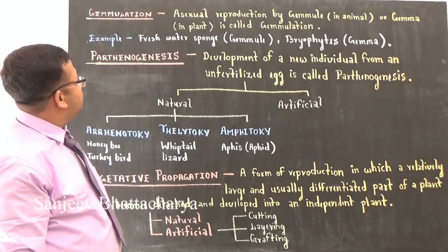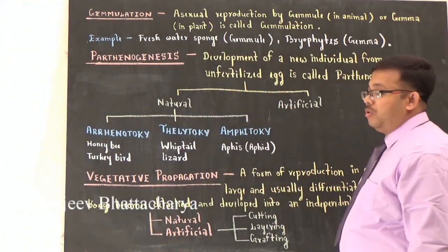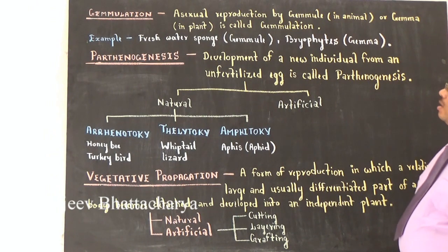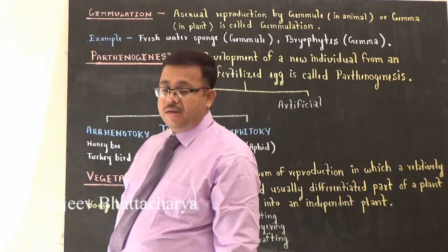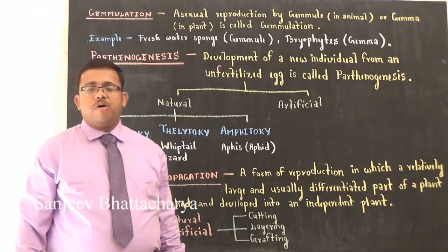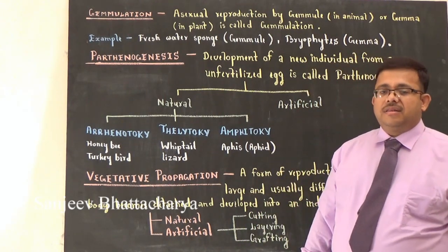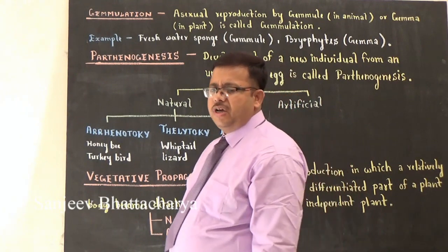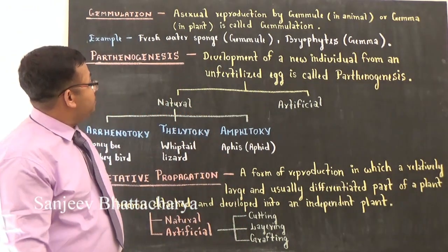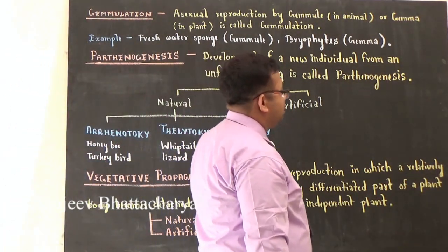Gemmulation: asexual reproduction by gemmule or gemma is called gemmulation. Gemmule is found in animals while gemma is observed in plants. Gemmule is an asexually produced mass of cells that is capable of developing into an animal. In the case of Sponges, gemmule is observed. Gemma is observed in plants like Marchantia (a bryophyte).